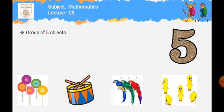Next group میں آپ کو chickens دیئے گئے ہیں — یہ چھوٹے چھوٹے chickens ہیں۔ ہم انہیں count کرتے ہیں: one chicken, two chicken, three chicken, four chicken, five chicken۔ کتنے chickens ہو گئے؟ Five! تو یہ ہمارے group of five objects کے ساتھ match کر رہا ہے — yes!